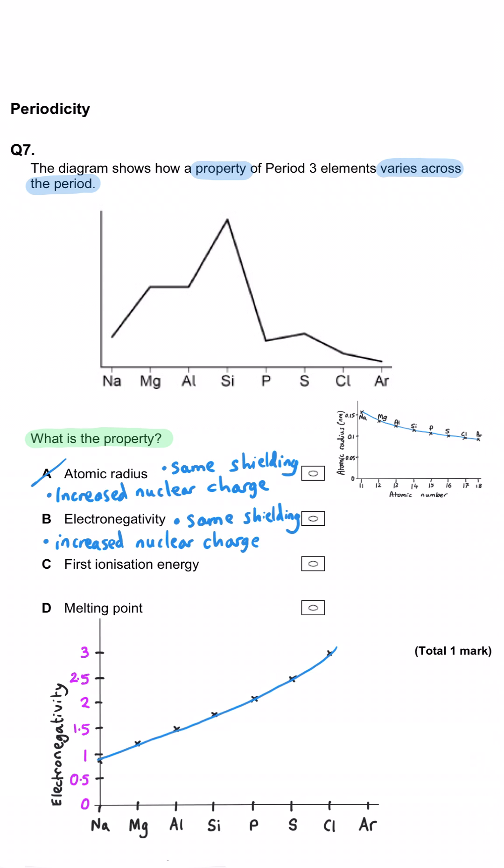Electronegativity. No, that is a general increase across the period for the same reasons really, a stronger nuclear charge and the same shielding, so atoms have a bigger power to attract the covalently bonded electrons.